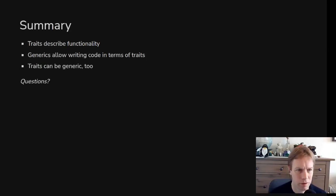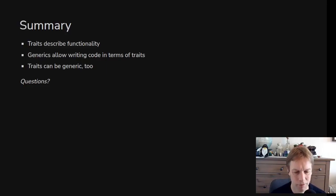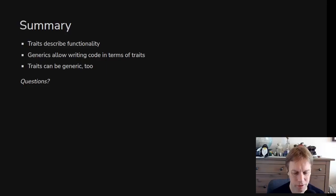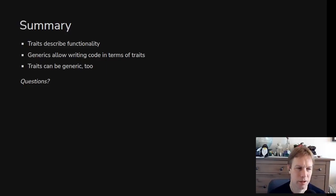To summarize: traits describe what you can do with an instance of a type. You can say 'this type implements this trait' and describe how. Generics allow writing code that doesn't work with specific types like u32, but instead with something where all you know is it implements a certain trait. Traits themselves can take type parameters and associated types to be more flexible — so you don't have to write the same thing over and over. That was traits and generic code that uses traits to describe what those generic types do.